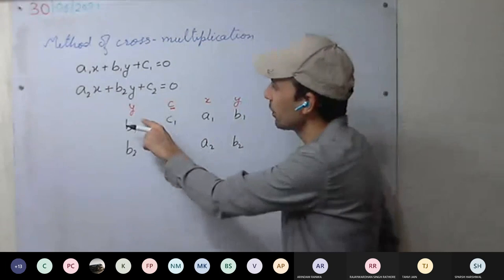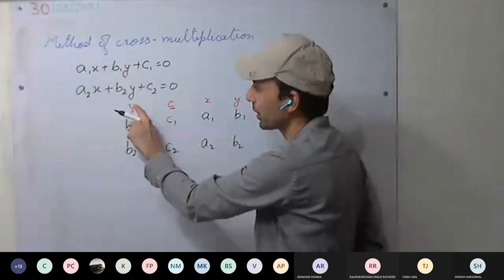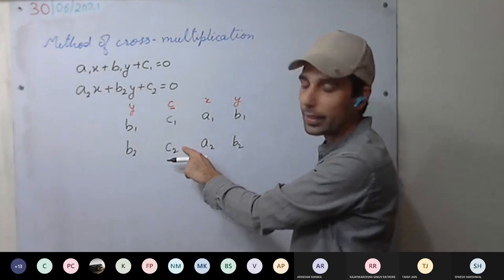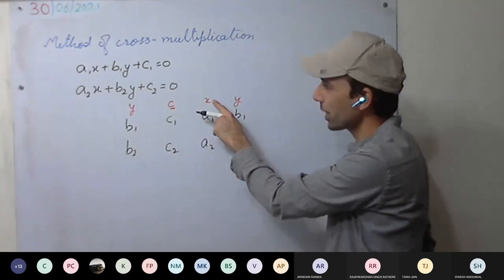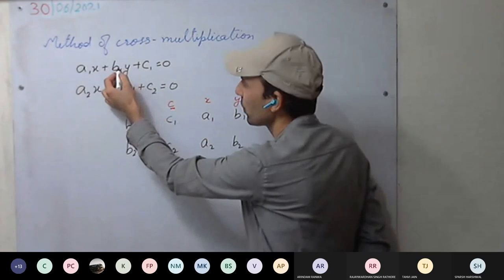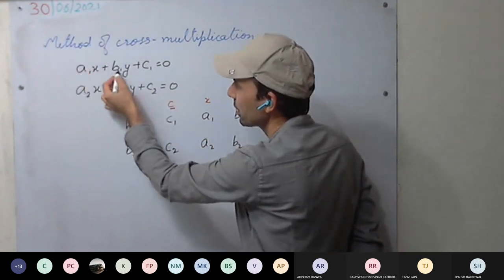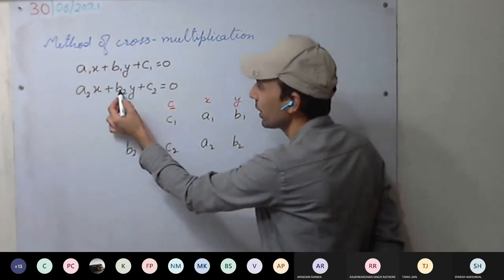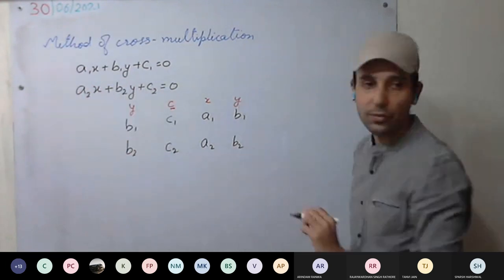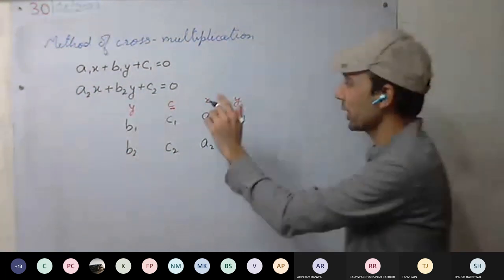The second step is writing the quotients. We start with the y term: quotients of y, then the constant terms, then the x term, then y again. So: b1, c1, a1, b1 for the first equation, and similarly b2, c2, a2, b2 for the second equation.